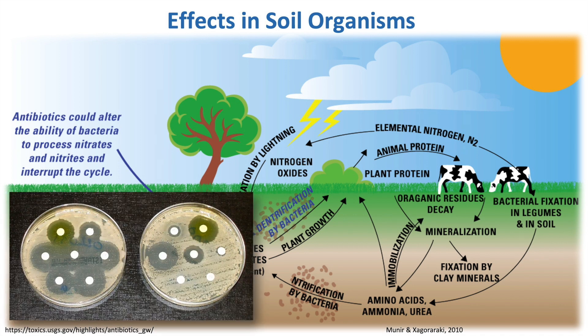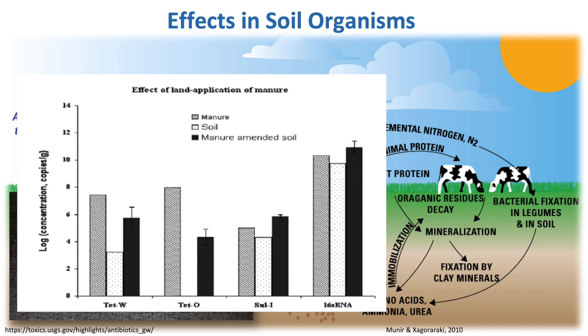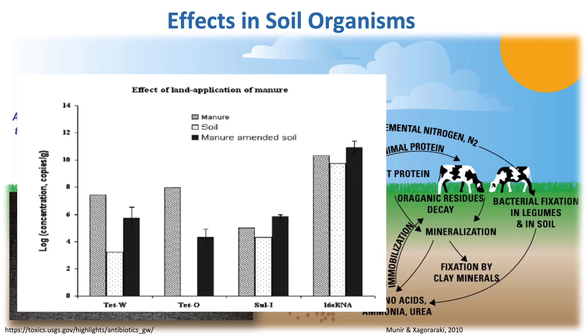Talking about antibiotic resistance — first, manure and land application. This has been very well studied. We know that if you apply manure to soil, you're almost always going to see increases in antibiotic resistance, whether from the introduction of the antibiotics themselves or the introduction of antibiotic-resistant genes or bacteria that were in the manure. This figure shows that manure has a certain level of antibiotic resistance; the background soil has a lower concentration. When you add the manure to the soil, you see increases in antibiotic resistance — fairly consistent across environmental studies.